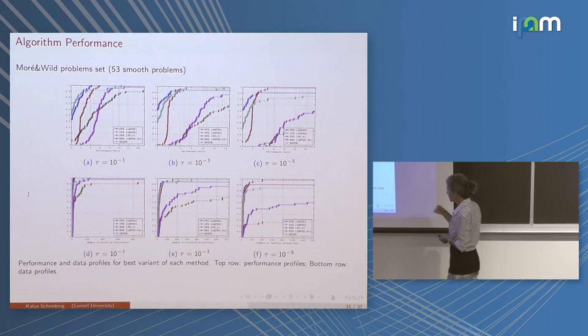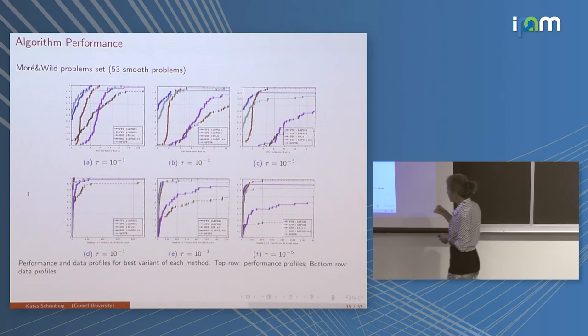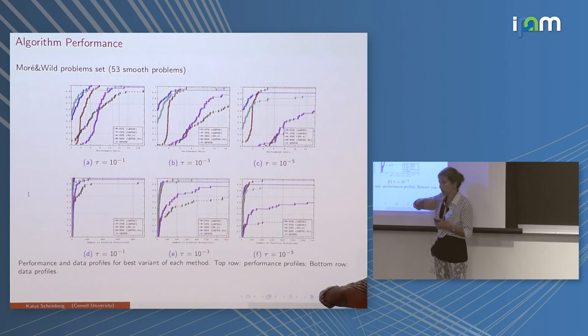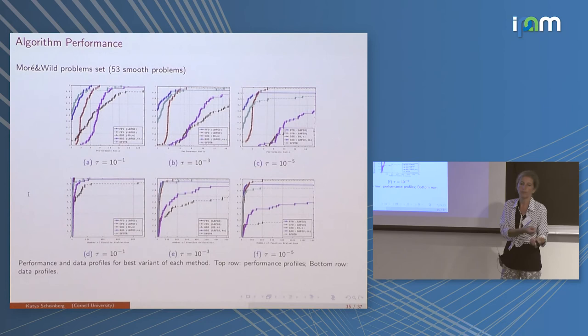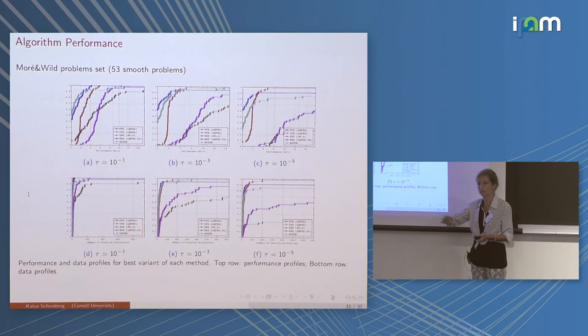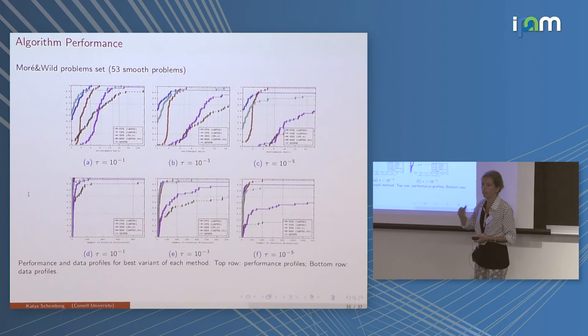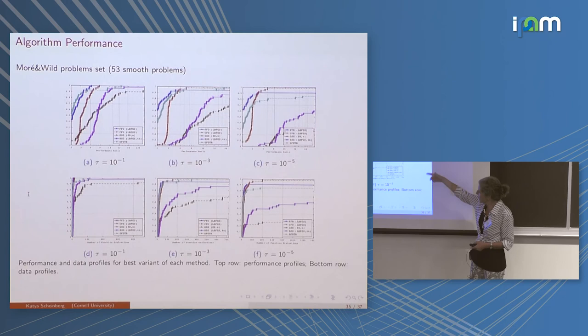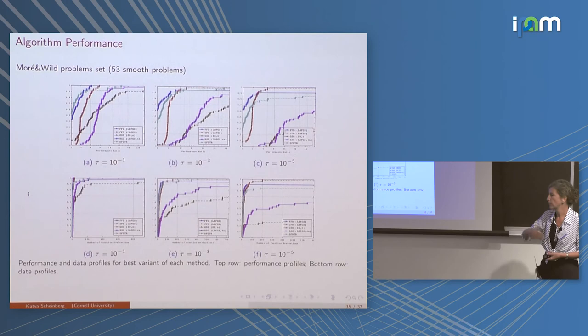An important practical point: in trust region we build quadratic approximations using interpolation. There is another way — quasi-Newton methods: if you have gradients you can accumulate them and build quasi-Newton approximations, which are well-known to work really well. The problem is they don't work well with inexact gradients or high-variance stochastic gradients. With interpolation you can get accurate gradients and use quasi-Newton; with Gaussian smoothing you cannot.